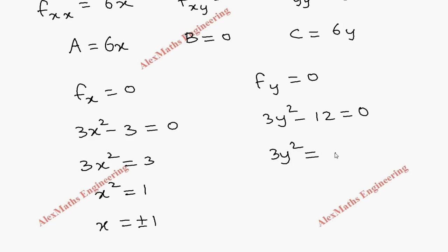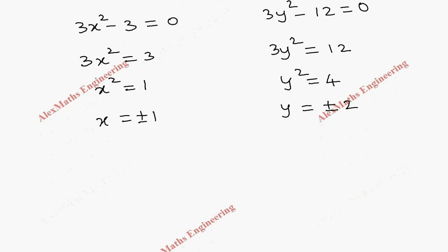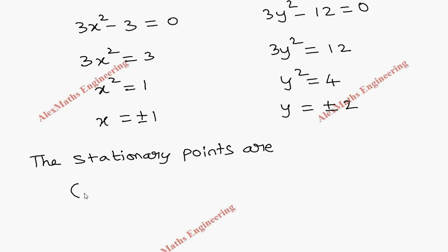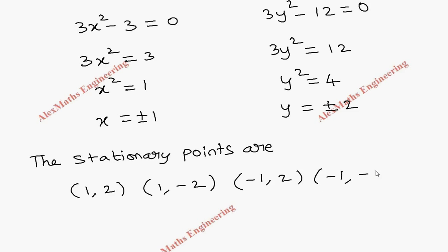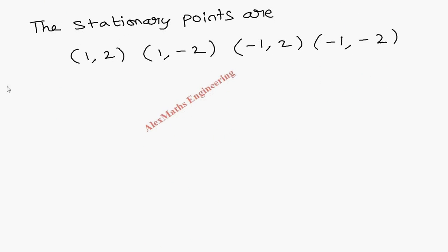From fy = 0 we get 3y² - 12 = 0, so y² = 4 and y = ±2. The stationary points are all combinations: (1, 2), (1, -2), (-1, 2), and (-1, -2).